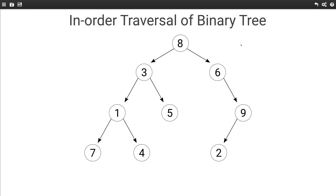To visit all the nodes in a binary tree doing an in-order traversal, we start at the root node — in this case it is 8. We first need to visit all the nodes in the left subtree in order, then we visit the current node, and then we visit all the nodes in the right subtree in order.